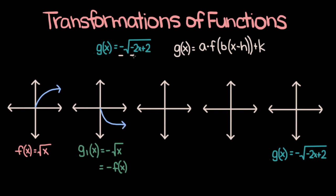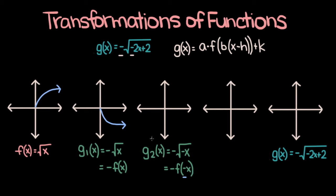Now the next thing we're going to account for is this negative sign inside the square root. So let's say we have a function g2 of x, which is negative the square root of negative x. G2 of x can be rewritten as negative f of negative x. We've already accounted for the first negative sign — that reflected f of x over the x-axis. Now let's think about what this second negative sign does. If g of x is equal to f of negative x, then g of x is f of x reflected over the y-axis. So g2 of x is going to be f of x reflected over the x-axis and then that graph reflected over the y-axis, giving us something like this.